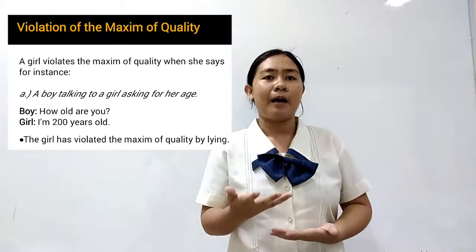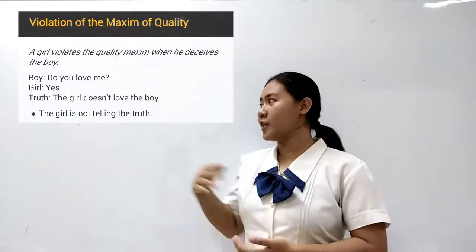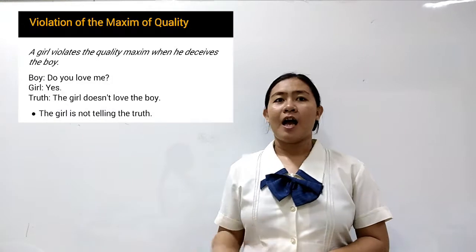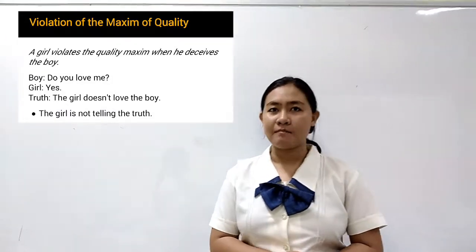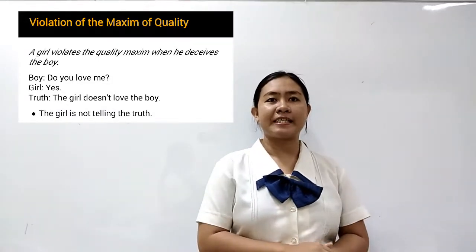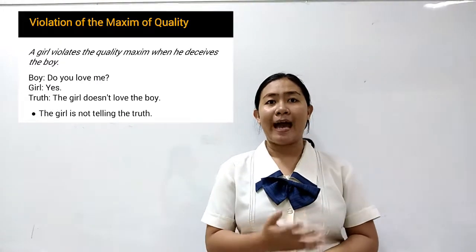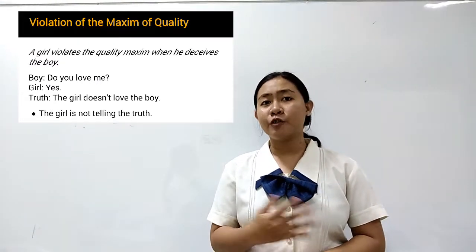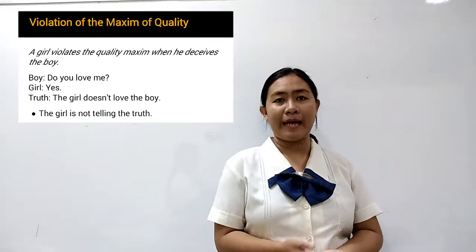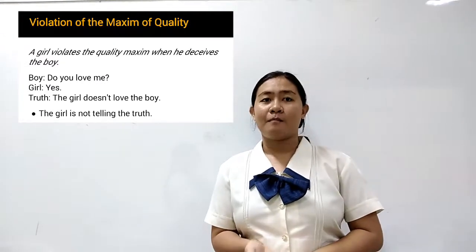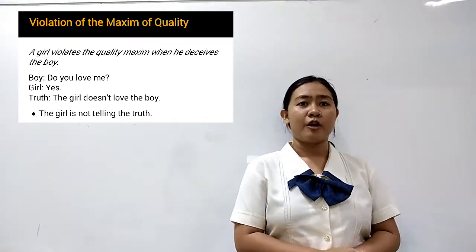Another example: a girl violates the maxim when she deceives the boy. The boy asked, 'Do you love me?' The girl replied, 'Yes.' But the truth is the girl doesn't love the boy, so the girl is not telling the truth.